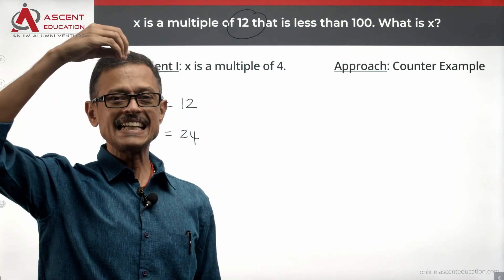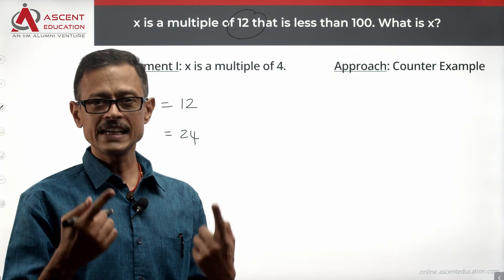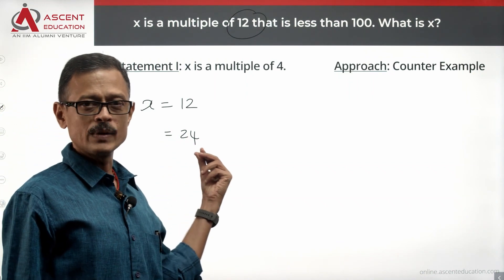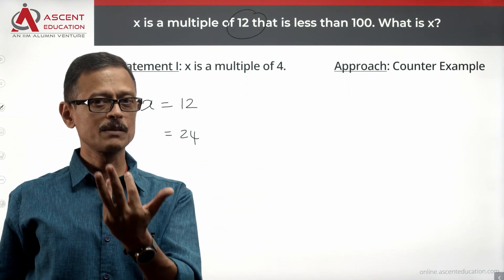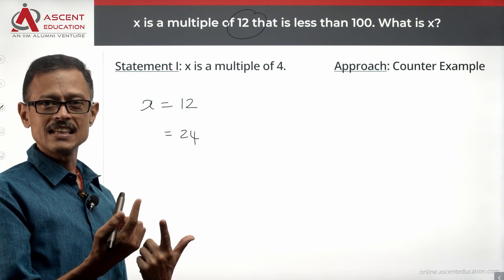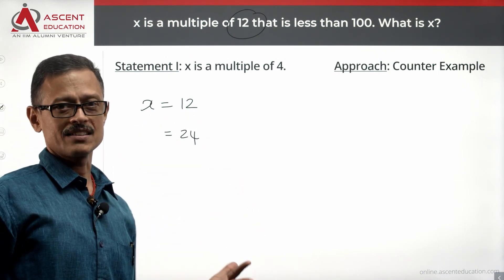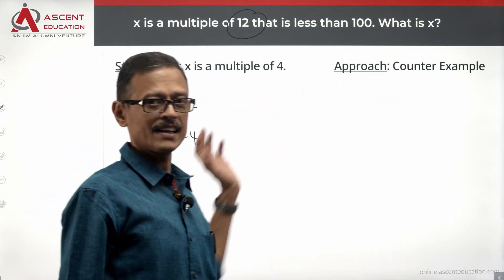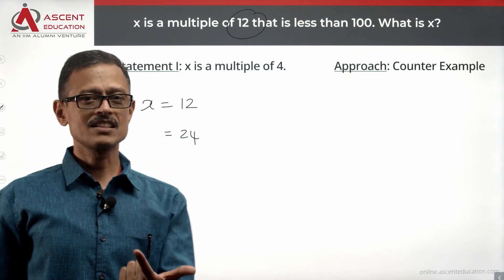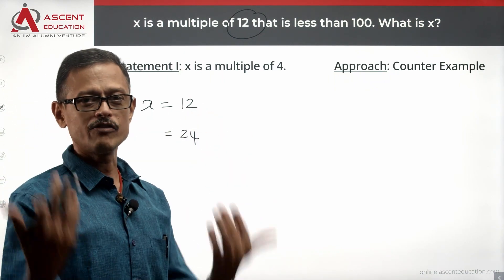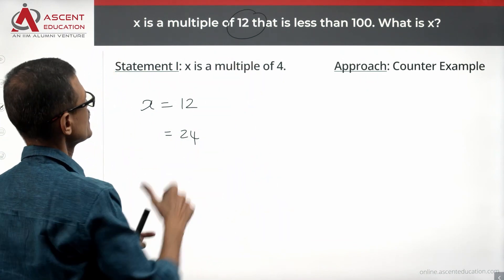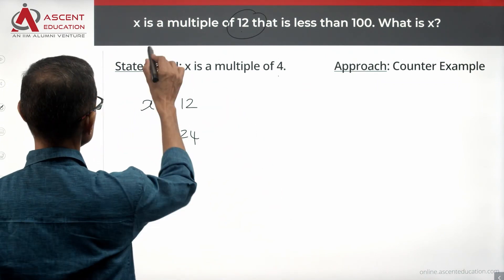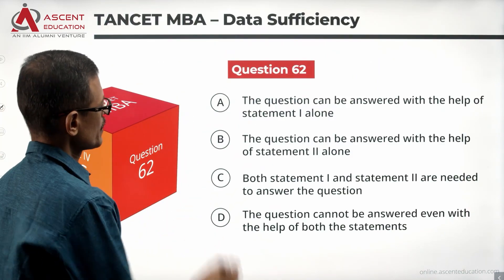So if it is a multiple of 12, it necessarily will be a multiple of 4. Do we get a unique answer? No. We have 8 possible answers. All multiples of 12 less than 100 could be possible answers: 12, 24, and so on. We have been able to find counter examples. All of these satisfy the condition that it is a multiple of 12 less than 100 and a multiple of 4. Not having a unique answer means statement 1 alone is not sufficient.